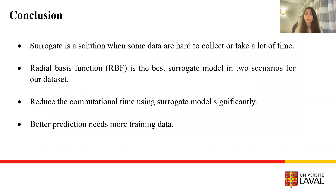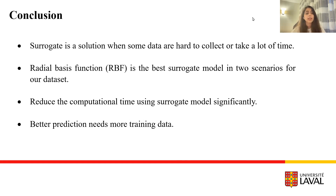The goal was to obtain an appropriate approximation of the main function using surrogate models. We evaluated surrogate models, especially the radial basis function (RBF) and Kriging models, since they can provide information about model uncertainty. Surrogate models are a solution when data are hard to collect or take a lot of time, and RBF is the best surrogate model in both scenarios for our dataset. Using surrogate models can save a significant amount of time — our dataset takes 20 days to generate. Finally, our results show that for better predictions, we need more training data. Thank you for your time.